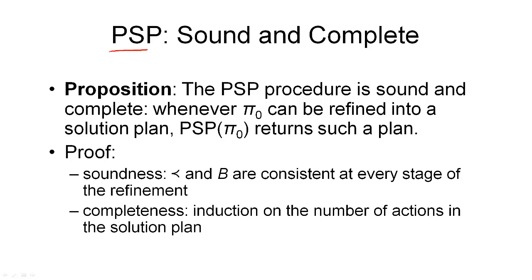Finally, our generic plan space search planner has the same two properties that our state space planner also had, namely, it is sound and complete. That means, whenever our planner is given π_0 or initial plan, and that can be refined into a solution plan, then our function PSP(π_0) will return a solution plan. More explicitly, soundness means that if the planner returns a result, then this is indeed a solution plan. And completeness means, if there is a solution plan, then our planner will be able to find this solution plan.